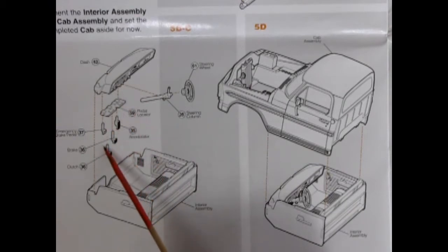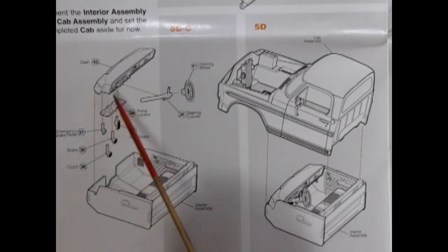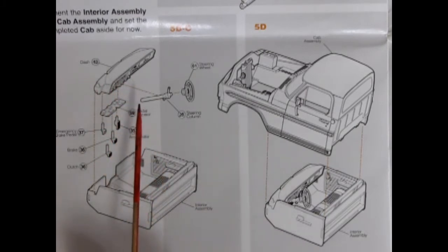The pedal cluster which includes the accelerator, the brake, the clutch, and the emergency brake pedal, all gluing up onto this pedal locator, all gluing up under the dash. We also have our steering column and our steering wheel. The cab then drops onto the interior assembly.